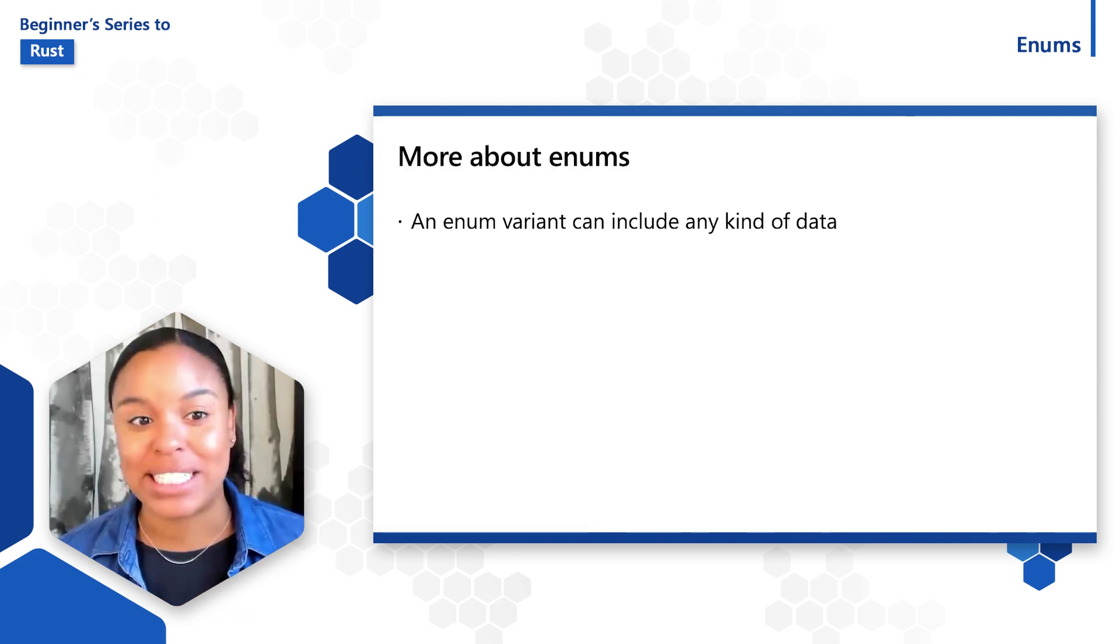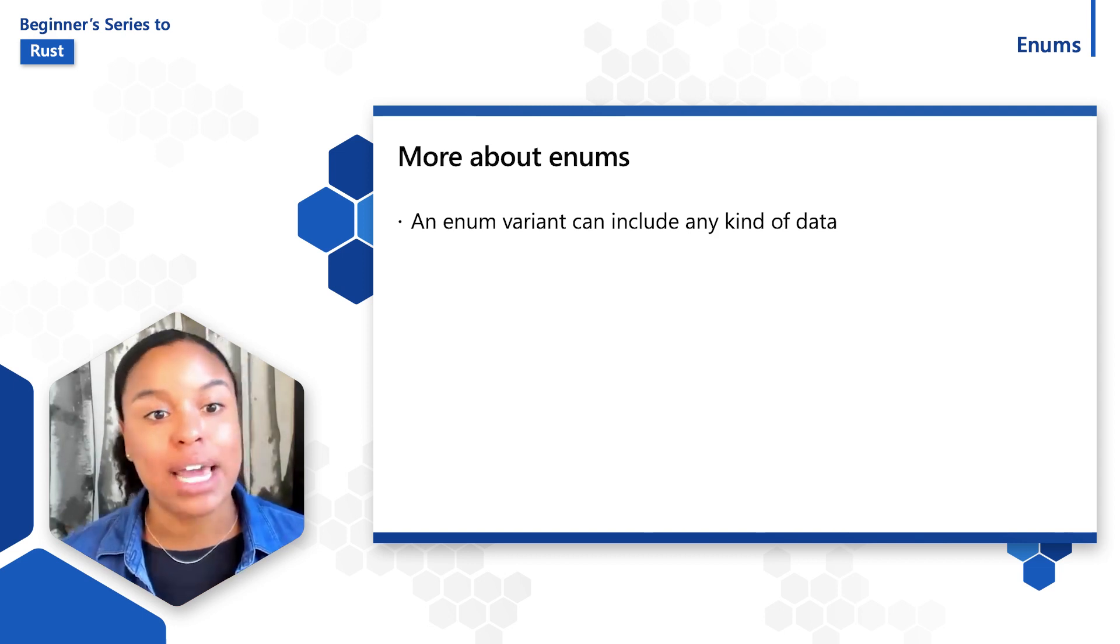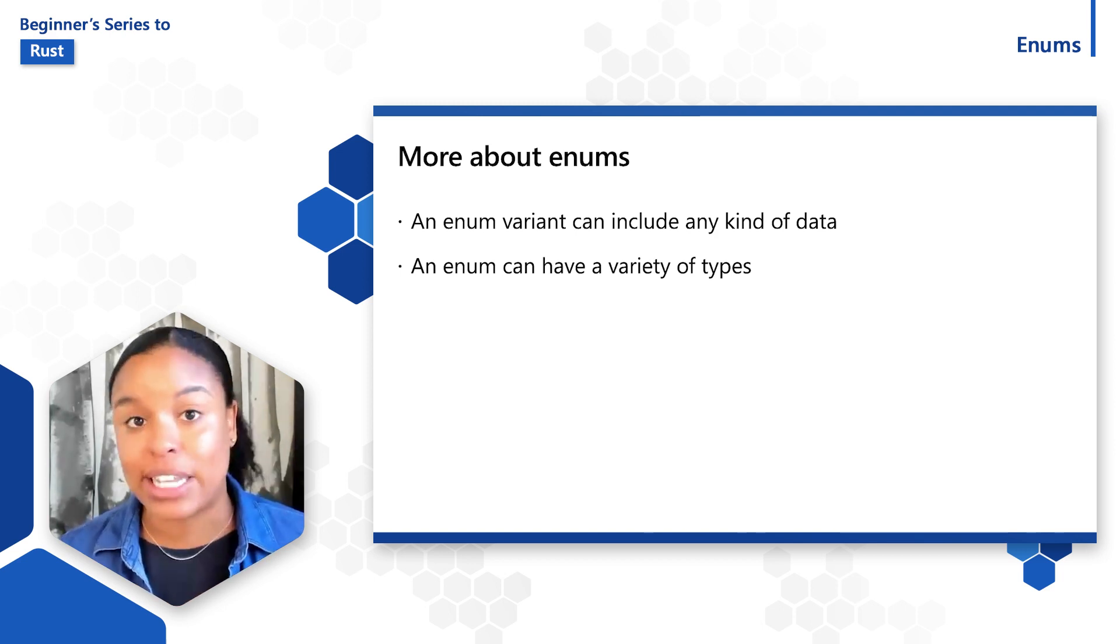The cool thing about enums is that you can put any kind of data inside a variant: strings, numeric types, structs, or even other enums. An enum can have a variety of types as well. So there's flexibility on the type of data and variants that are in an enum.